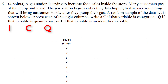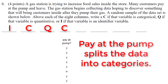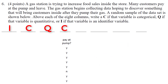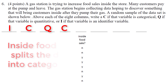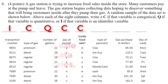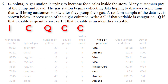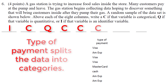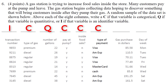Next we have pay at the pump, and that is categorical — those who paid at the pump and those who did not. We have inside food sale, whether or not there was an inside food sale, with yes or no answers, which are categories. Next we have type of payment, which is categorical because we have people who paid with Visa and other types of payments like American Express or MasterCard.